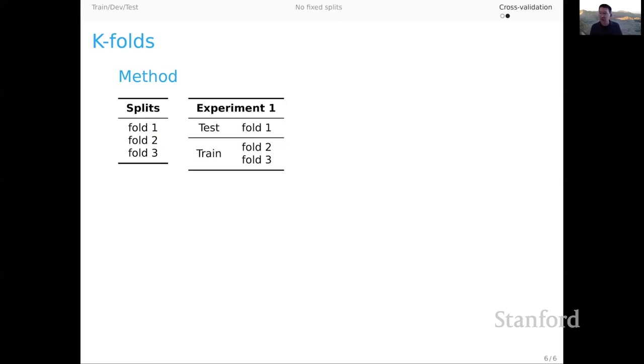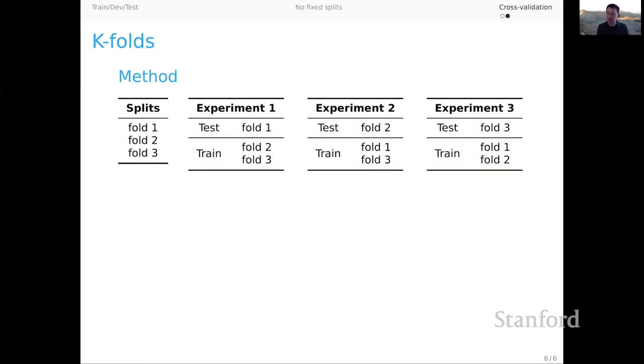One where fold one is used for testing, and two and three are merged together for training. A second experiment where we hold out fold two for testing, and the union of one and three is used for training. And then finally, a third experiment where fold three is used for testing, and folds one and two are concatenated for the train set.